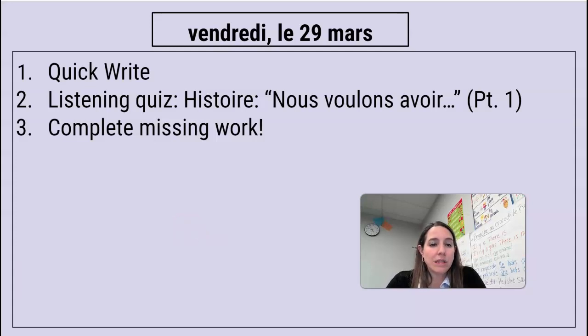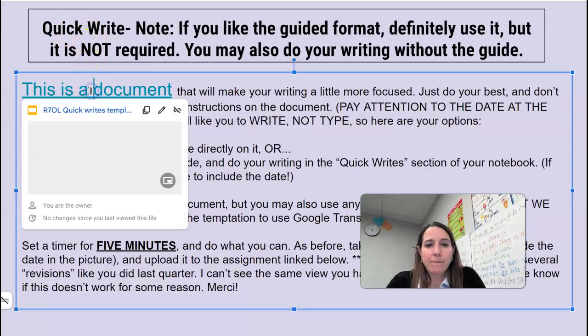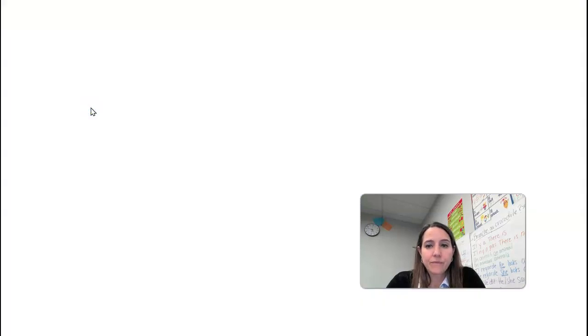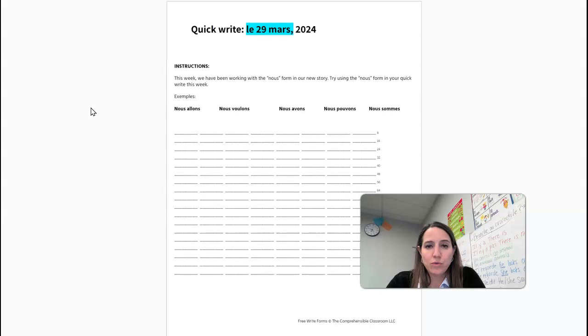Maintenant le quick write aujourd'hui. Pour aujourd'hui, we've been working with the new form now. We do this, we do that. So could you possibly talk about yourself and someone else doing something together? We go, nous allons, nous voulons, we want, nous avons, nous pouvons, nous sommes.